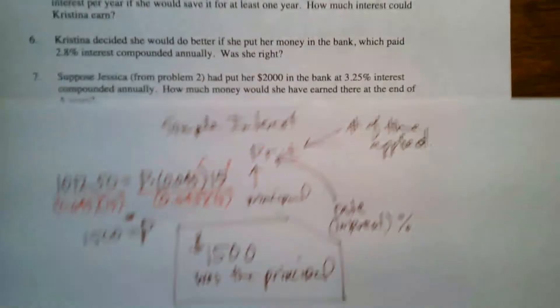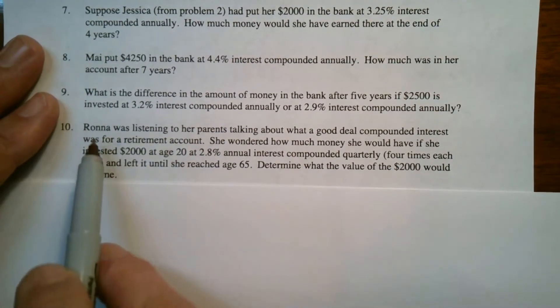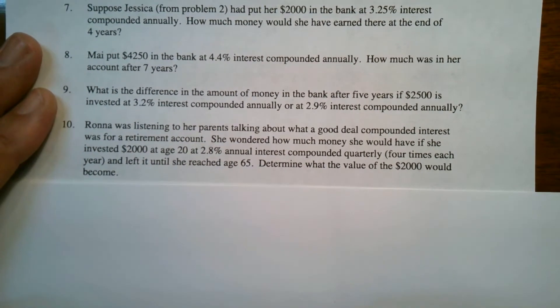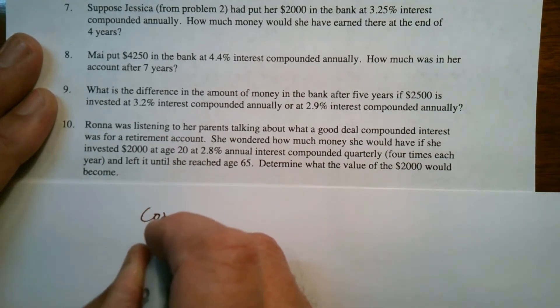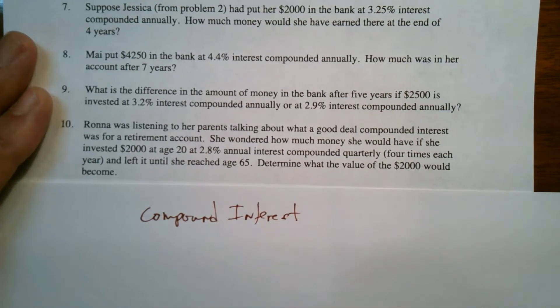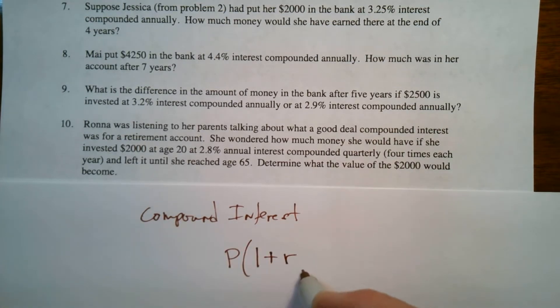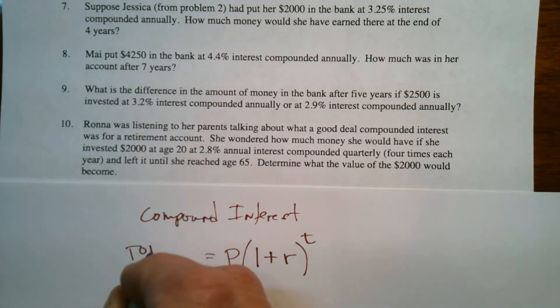So let's do one that has to do with compound interest. So we'll look at number 10. So compound interest is different. What we do is we take the principle and we multiply it by one plus the interest rate all to the T. This is going to find your total value at this point, not necessarily just the total interest, but this is the total value.